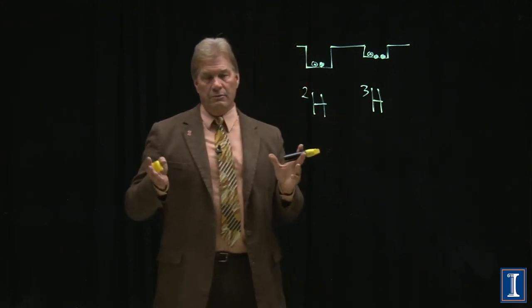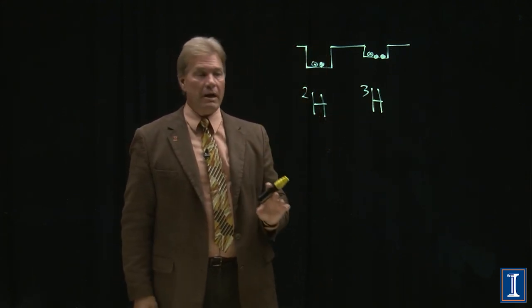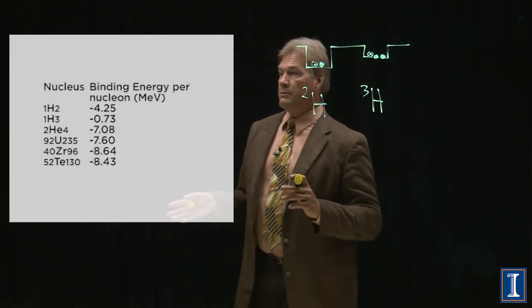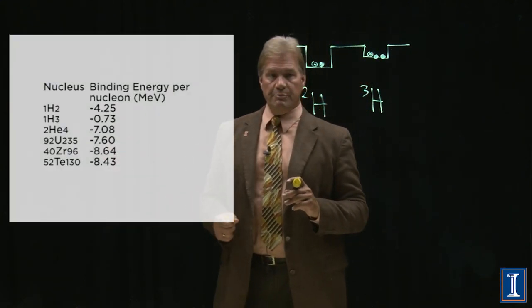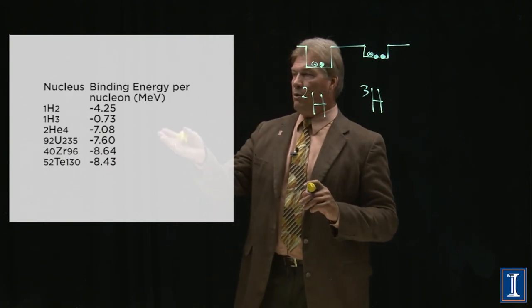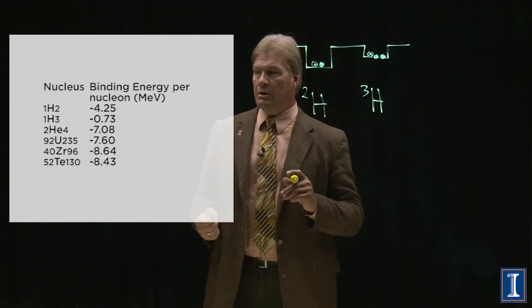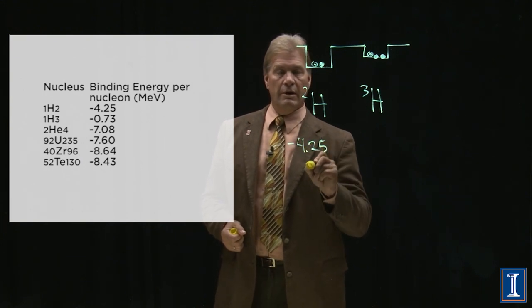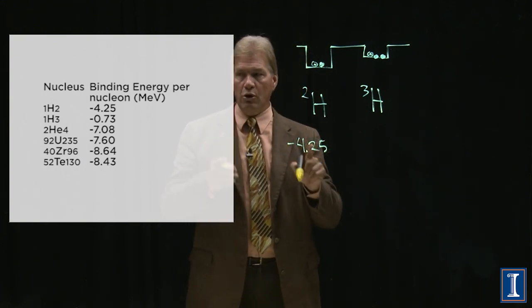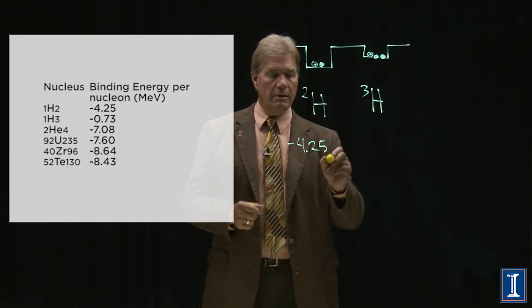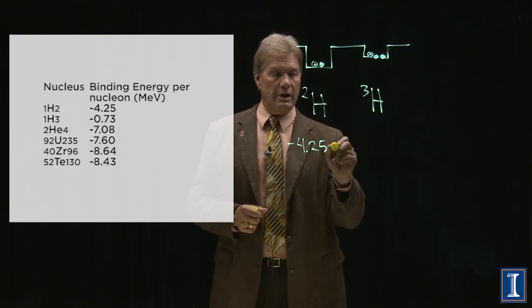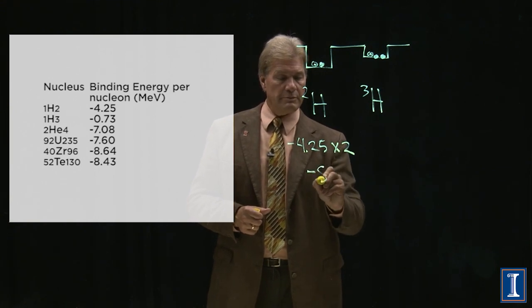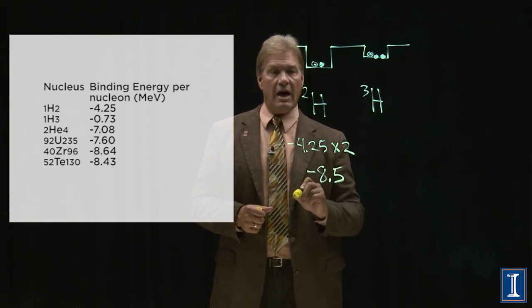Now, to figure out what numbers, how tightly bound to make this, we need to look at our chart. Binding energy per nucleon. So, we look at 1H2, it says minus 4.25, but remember, that's per nucleon. And there are two nucleons, so we multiply that by two, and this becomes minus 8.5.